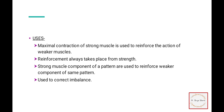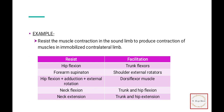The use of irradiation and reinforcement is that the maximal contraction of a strong muscle is used to reinforce the action of a weaker muscle — reinforcement always takes from strength. The stronger muscle components of a pattern are used to help the weaker components. For example, if we resist the hip flexors, we facilitate the trunk flexors. If we resist the forearm supinator, we facilitate the shoulder external rotators.